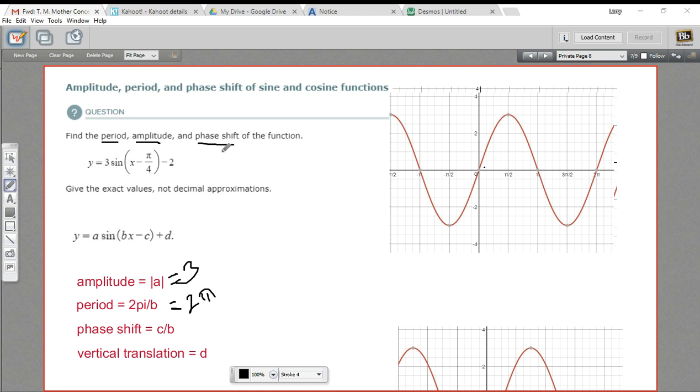Next, phase shift - how much we move this graph left or right. This depends on this number here. We've got π/4 as c. You'll notice this is minus c, and we've got a minus here, so c is positive π/4. The phase shift is c/b, c divided by b. Again, b is just 1 here, so our phase shift is positive π/4.